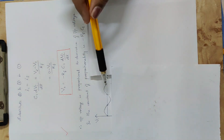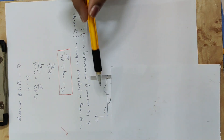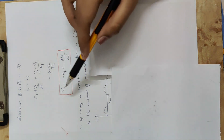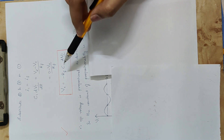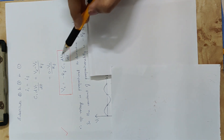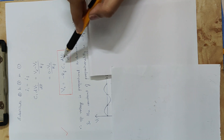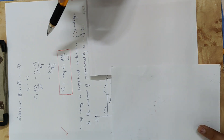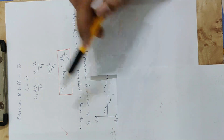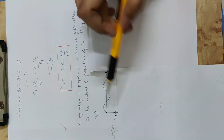Now we have to go to the waveform. The input is a sinusoidal waveform, and we have to get the output here. Now Vo is equal to minus Rf into C1 into dVi by dt of sine. The differentiation of sine is cosine.